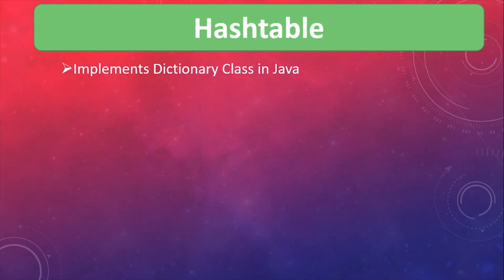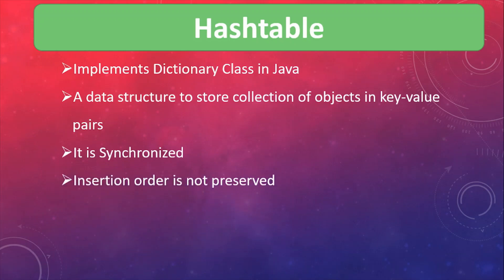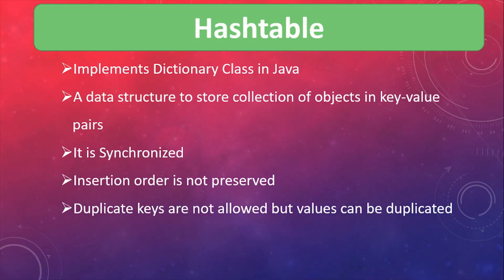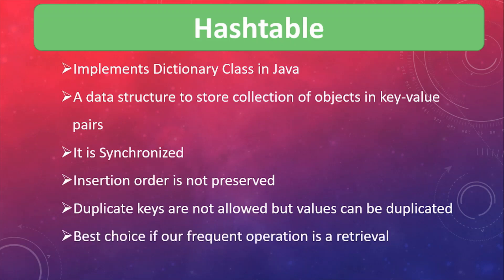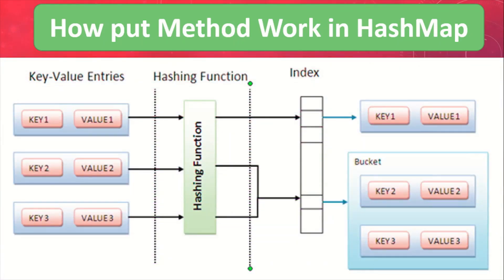A hash table class in Java is a concrete implementation of the abstract Dictionary class. It is a data structure that can store a collection of elements in the form of key-value pairs. Hash table is synchronized, meaning it is thread safe. Insertion order is not maintained, duplicate keys are not allowed, but values can be duplicated. It is the best choice when frequent operations involve retrieval of data, because HashMap uses hash table as its underlying data structure.